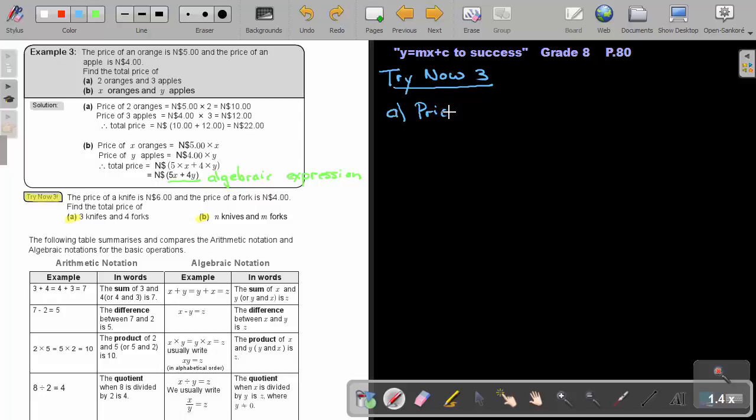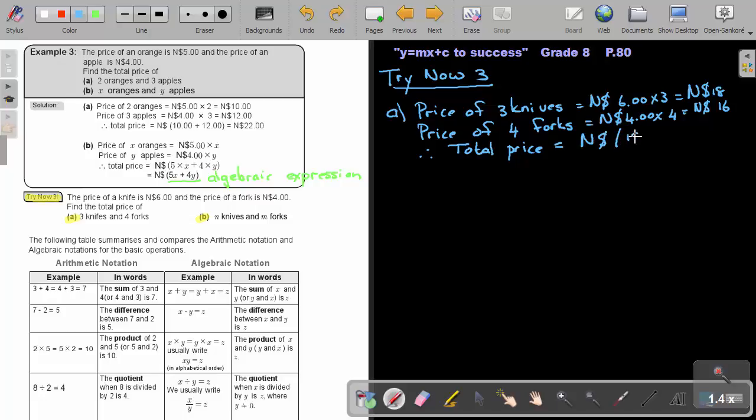So let's look at A, so it will be the price of 3 knives, which will be, remember, it's 6, so it's 6 Namibian dollars times 3, and that will be 18 Namibian dollars. And then the price of 4 forks, it will be 4 Namibian dollars times 4, which will be 16 Namibian dollars. And then therefore, the total price will be equal to, we can just say, it's that 18 plus the 16, and that will be equal to 34 Namibian dollars.